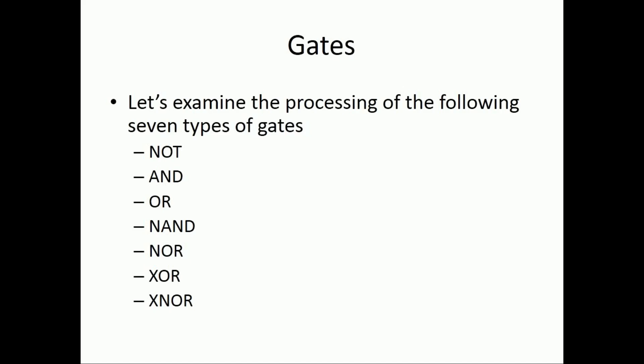We have multiple different types of logic gates available: NOT gate, AND gate, OR gate, NAND gate, NOR gate, XOR gate, and XNOR gate. The first three — NOT, AND, and OR — are known as the basic gates. The next two — NAND and NOR — are known as universal gates. And finally, the remaining two are known as exclusive gates: exclusive OR gate and exclusive NOR gate.